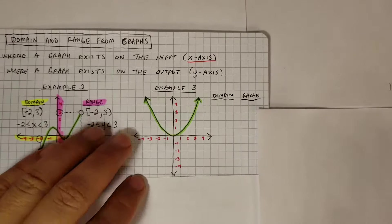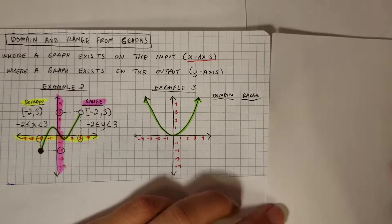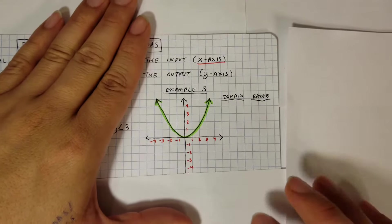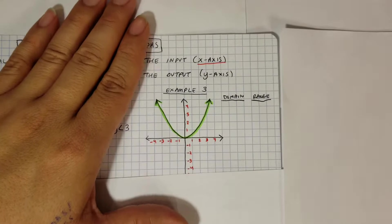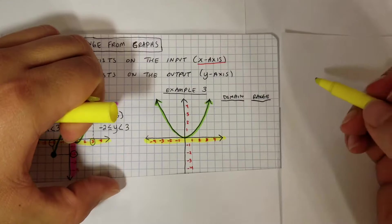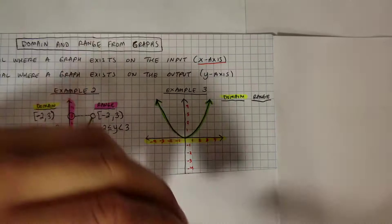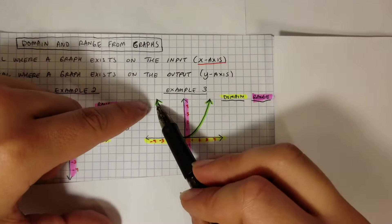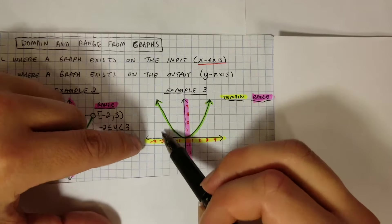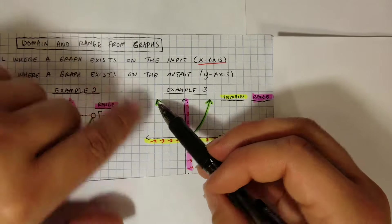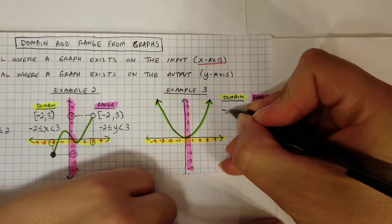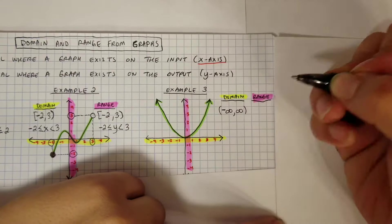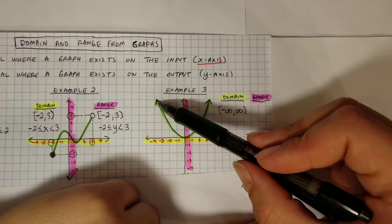Example number 3 — same idea, but notice this graph has arrows, which is very important. An arrow at the end of a graph means it goes on forever and never really ends. This graph goes forever to the left and forever to the right, so the domain is from negative infinity to positive infinity. Infinity always gets a parenthesis. So the domain is (-∞, ∞).